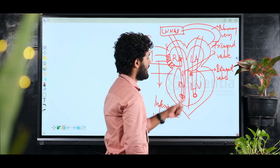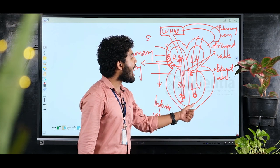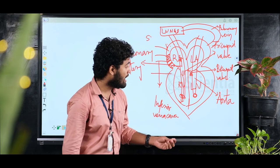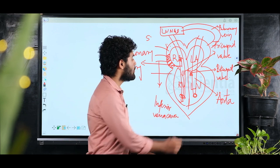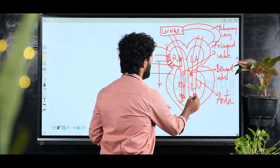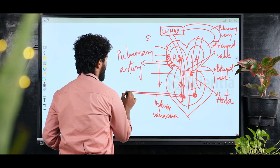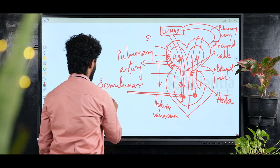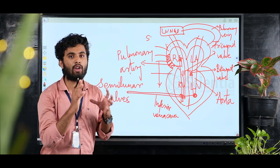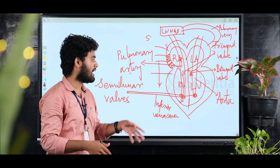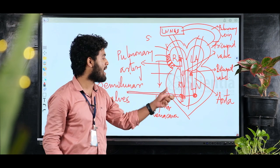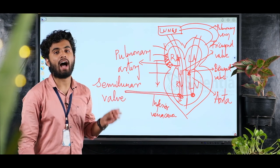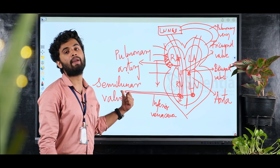The oxygenated blood from the left ventricle enters the aorta, which is the largest artery. To prevent backflow from the pulmonary artery and aorta back into the heart, there are valves called semi-lunar valves. 'Semi' means half and 'lunar' refers to the moon shape of these valves.